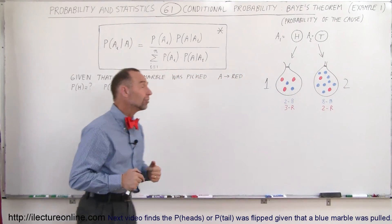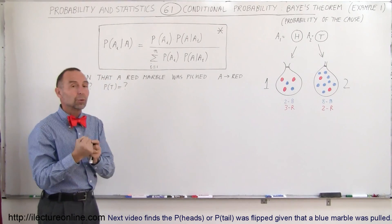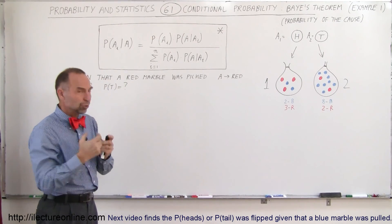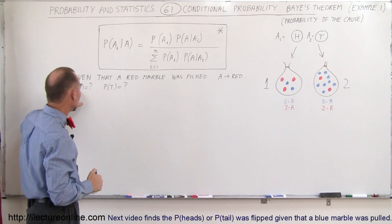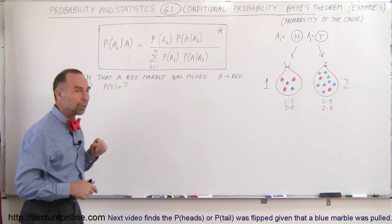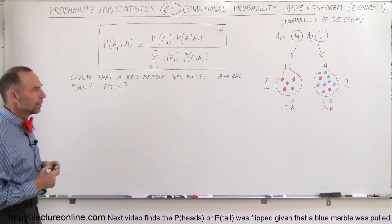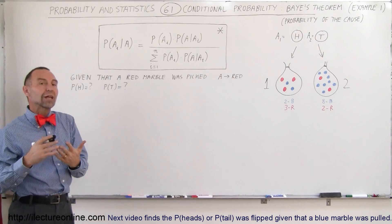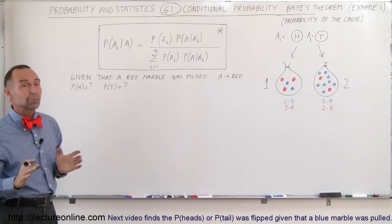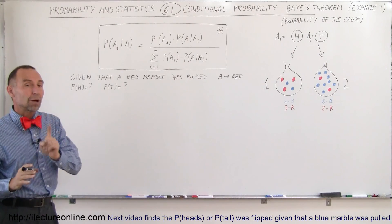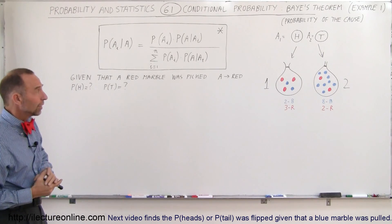Now we're going to reverse things. What if we know that a red marble was picked? So A is now red. Then what is the probability that we tossed heads, or what is the probability that we tossed tails with the coin? We have prior knowledge that we picked a marble out of either bag one or bag two. We don't know which bag we picked it from, but we do know the marble was red. So what's the probability we threw heads or tails?